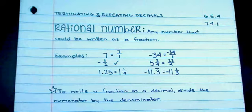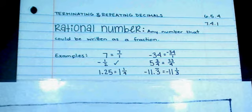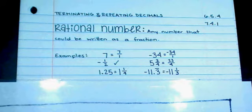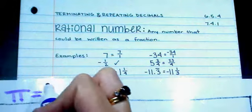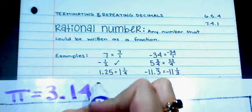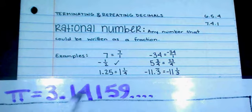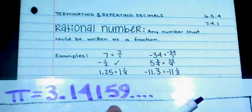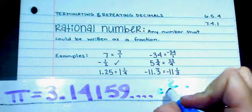Not all decimals will be able to be expressed as fractions. Some examples of irrational numbers would be any number that we express more commonly as a symbol, something like pi, which is a short way of expressing the number 3.14159, and it just continues on forever. There is no way to represent this as a fraction. There are some fractions that get close — often you will see pi represented as 22 over 7.